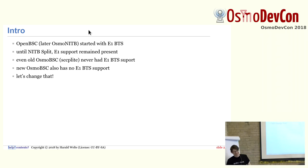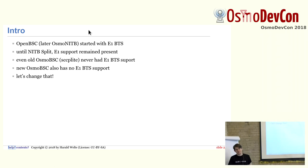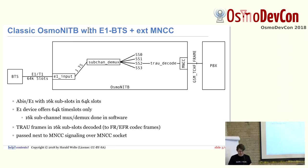Since the new Osmo BSC is sort of a derivative of the original Osmo BSC, it also has no E1-BTS support. Which means now in the new split NITB architecture, which is much closer to the GSM specs with all the individual elements of the network, we don't have the support for the original BTSs, which is of course a bit of a bummer.